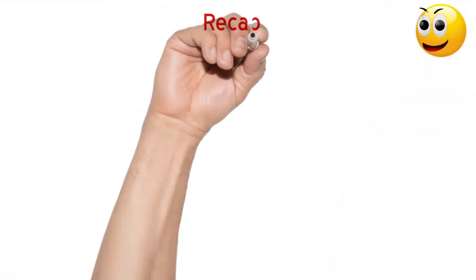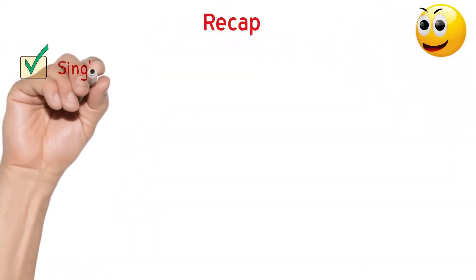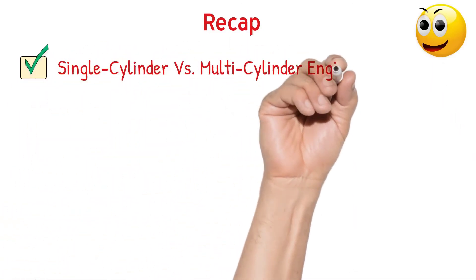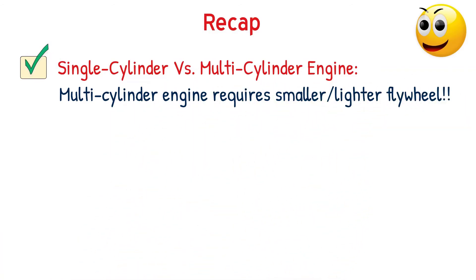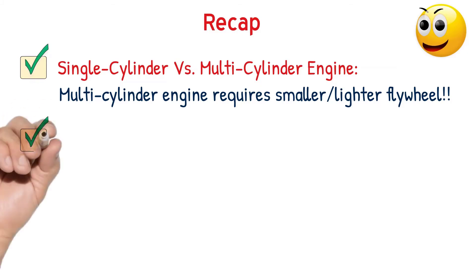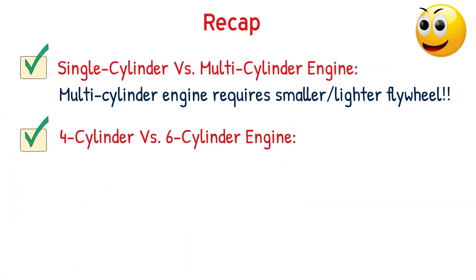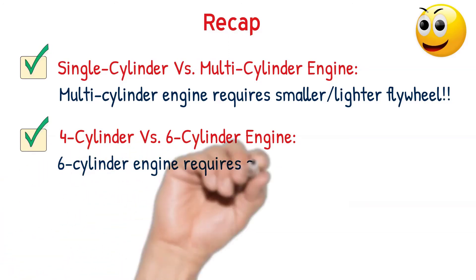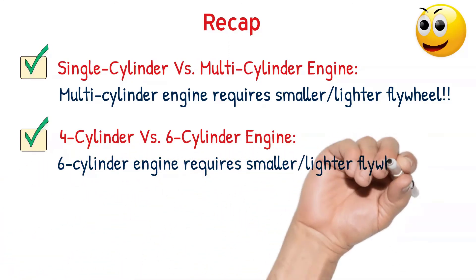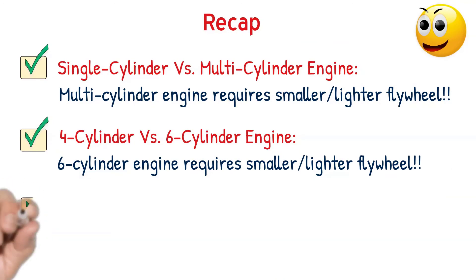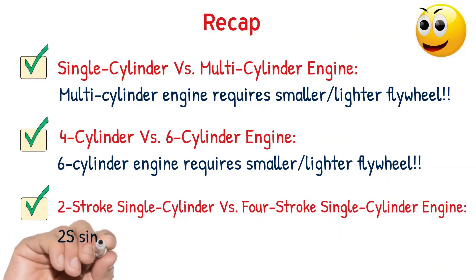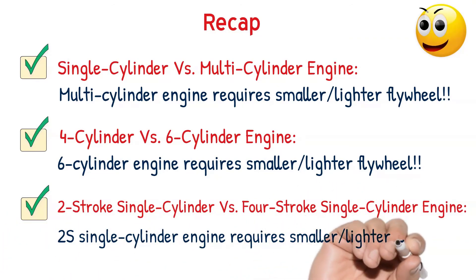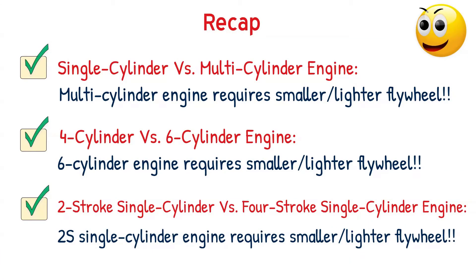Finally, let us do a quick recap. When all other things are constant, a multi-cylinder engine will require a smaller and lighter flywheel than that of a single-cylinder engine. When we compare a four-cylinder engine with a six-cylinder engine, the six-cylinder engine will require a smaller flywheel because the fluctuation is still lesser than that of the four-cylinder engine. Now comparing two single-cylinder engines — two-stroke and four-stroke — since the two-stroke engine produces a power stroke for every rotation of the crankshaft, it requires a comparatively smaller flywheel than that of the four-stroke engine.